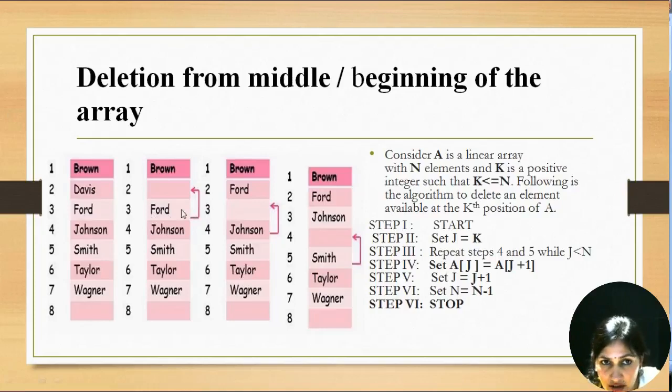This location become vacant. Then we move Johnson at this location. Then this location become vacant. Then we move Smith over here. Then this location become vacant. And so on. We move all the remaining values to one location upward.